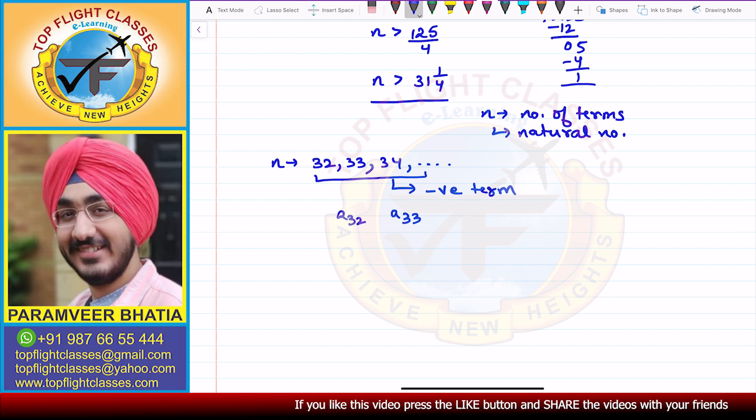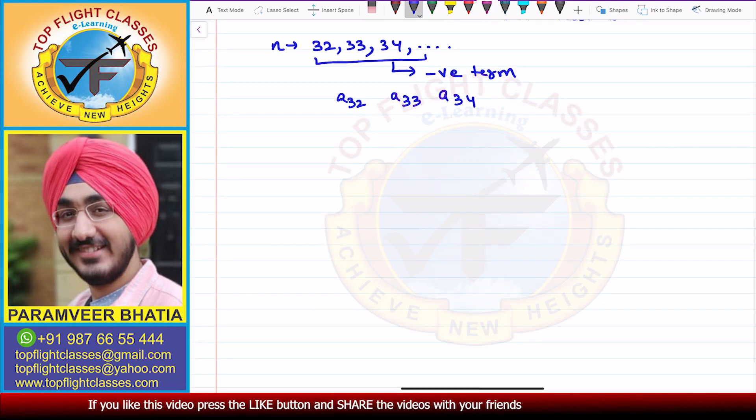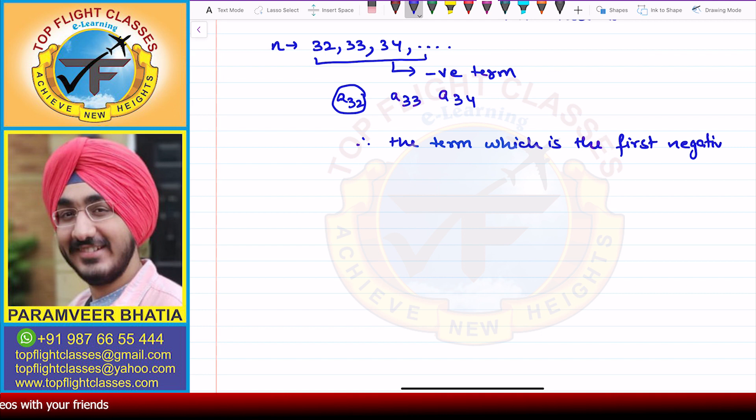A33 is also a negative term. A34 is also a negative term. But the first negative term is A32. So therefore, the term which is the first negative term is 32. And that is what is required in this question.